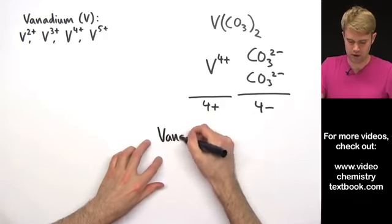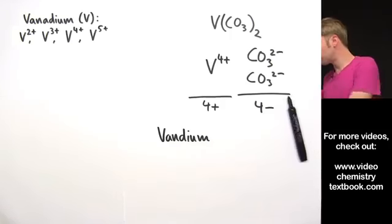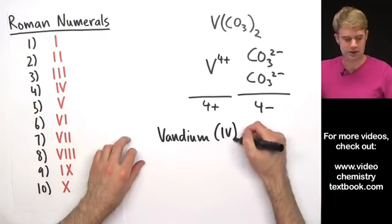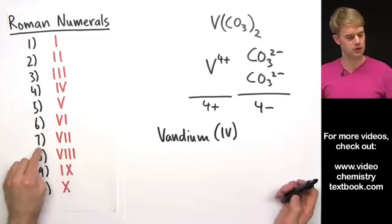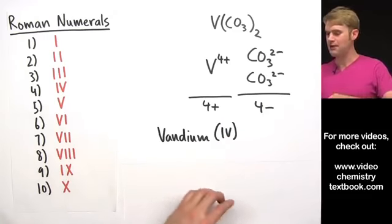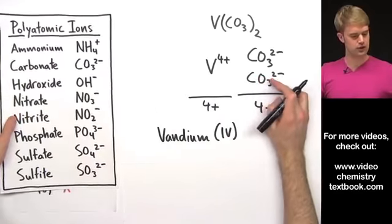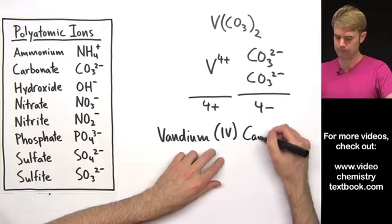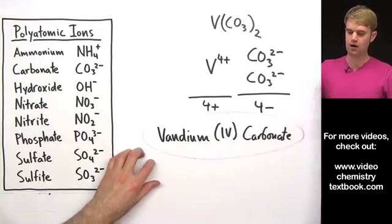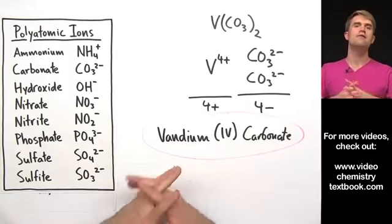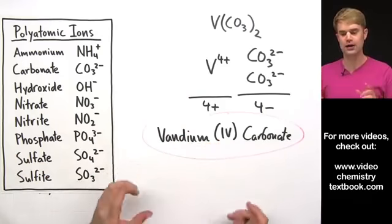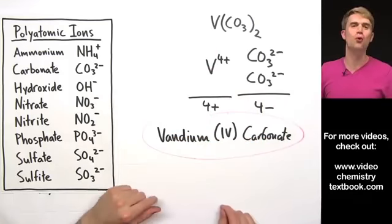So we're going to call this compound vanadium. The Roman numeral for 4 is IV, so it's vanadium(IV). It's a good idea to memorize the Roman numerals at least up to 7, which is probably the highest ion you'll ever see. And this ion, CO₃²⁻, is carbonate. So the name of this compound is vanadium(IV) carbonate. That is how we take the formula for a compound that contains transition metals and write a name for it complete with Roman numerals.